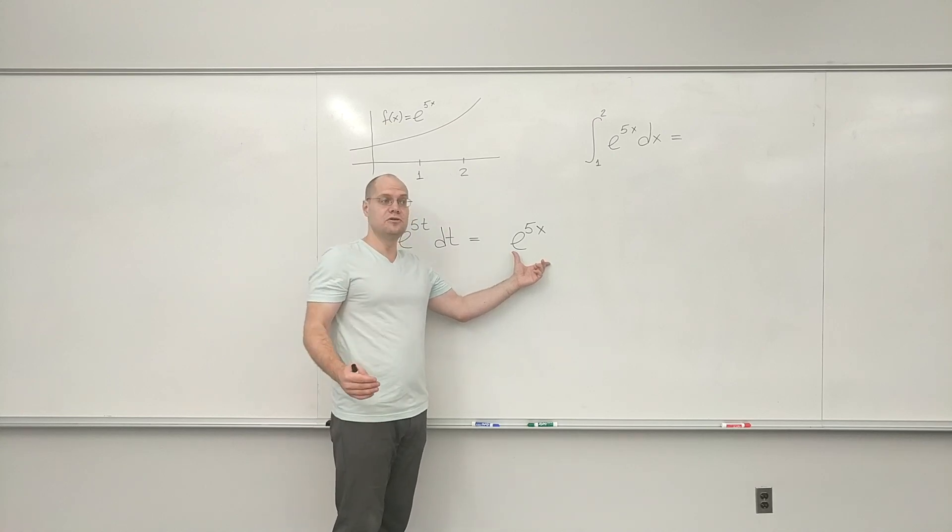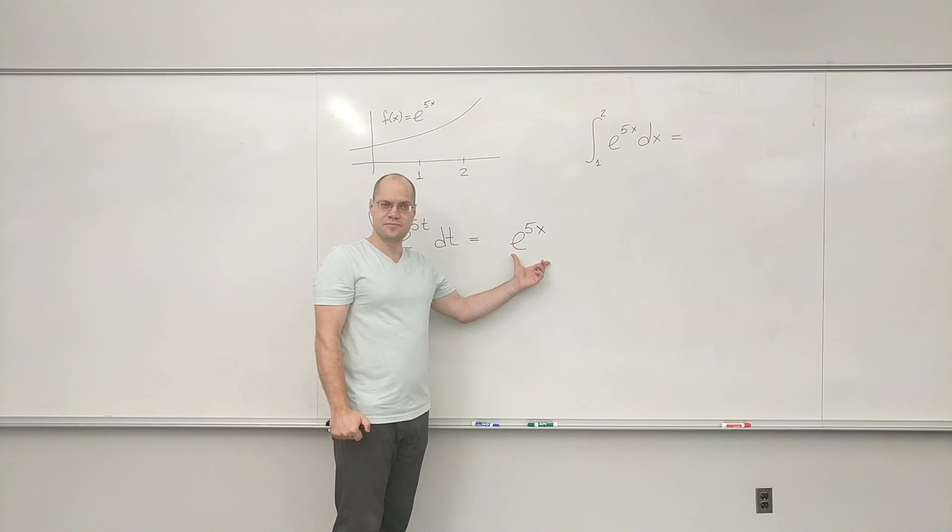So what do I do? I take the derivative. And what do I get? Students who are ready for tomorrow's exam? 5 times e to the 5x. The chain rule. And by the chain rule, the derivative of this is 5 times e to the 5x.